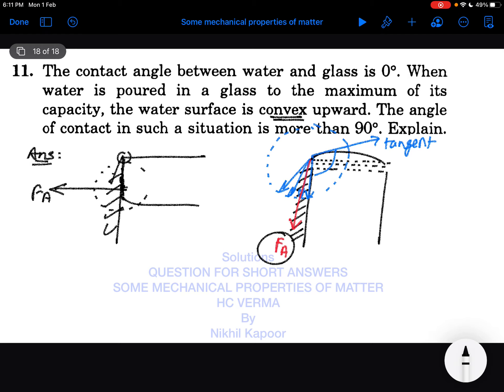The shape changes to convex and hence it becomes 90 degrees. That is the explanation to this question. Thank you.